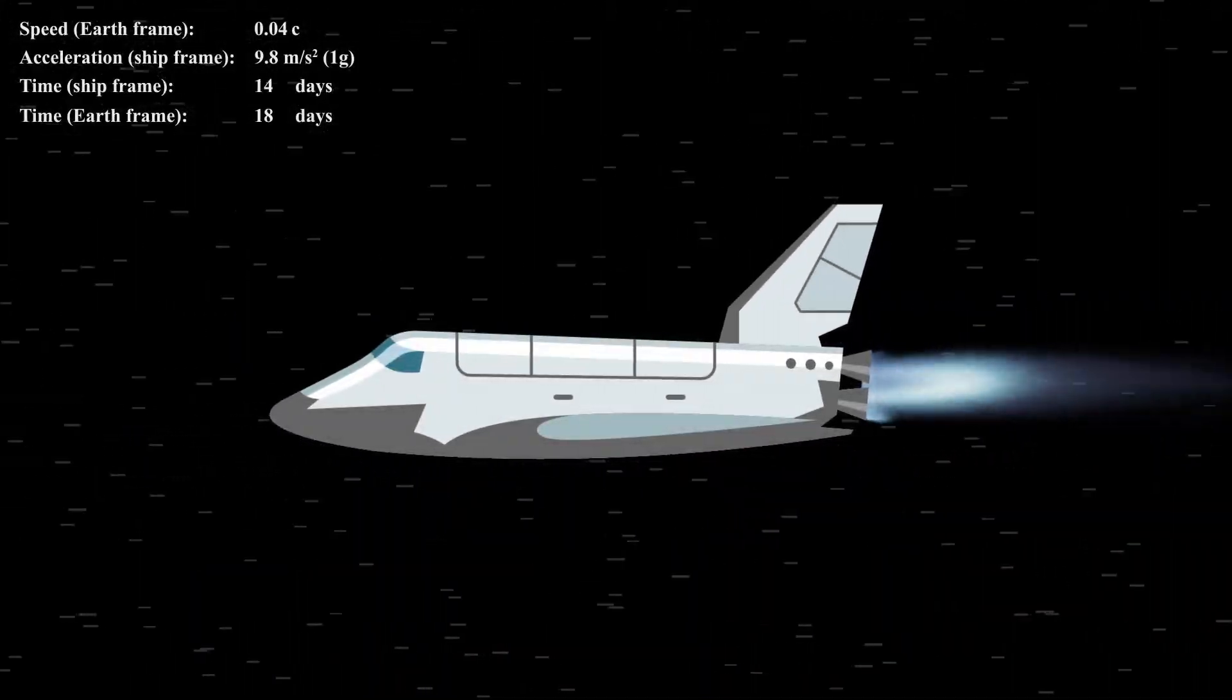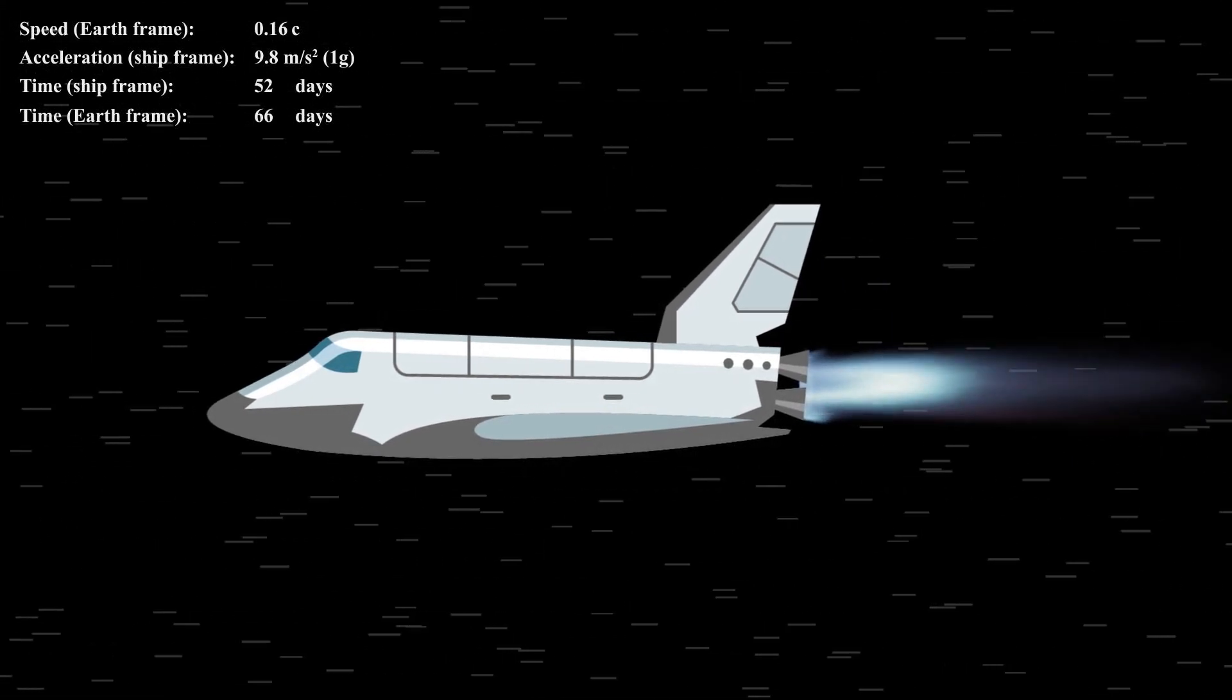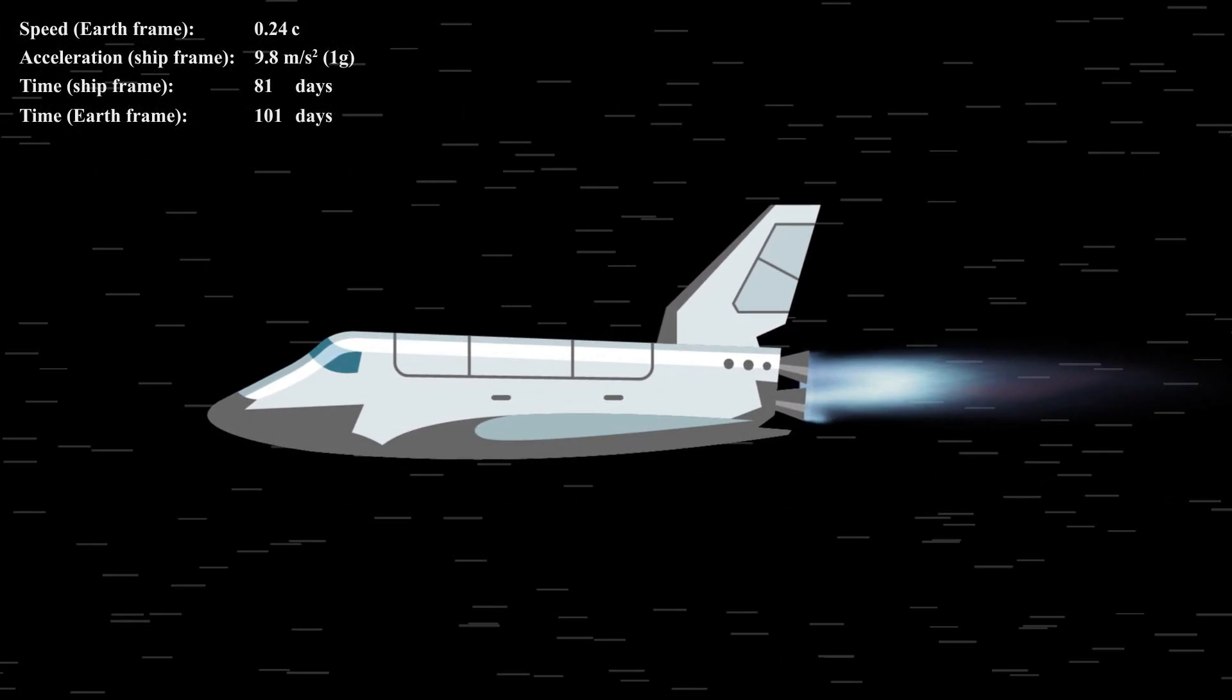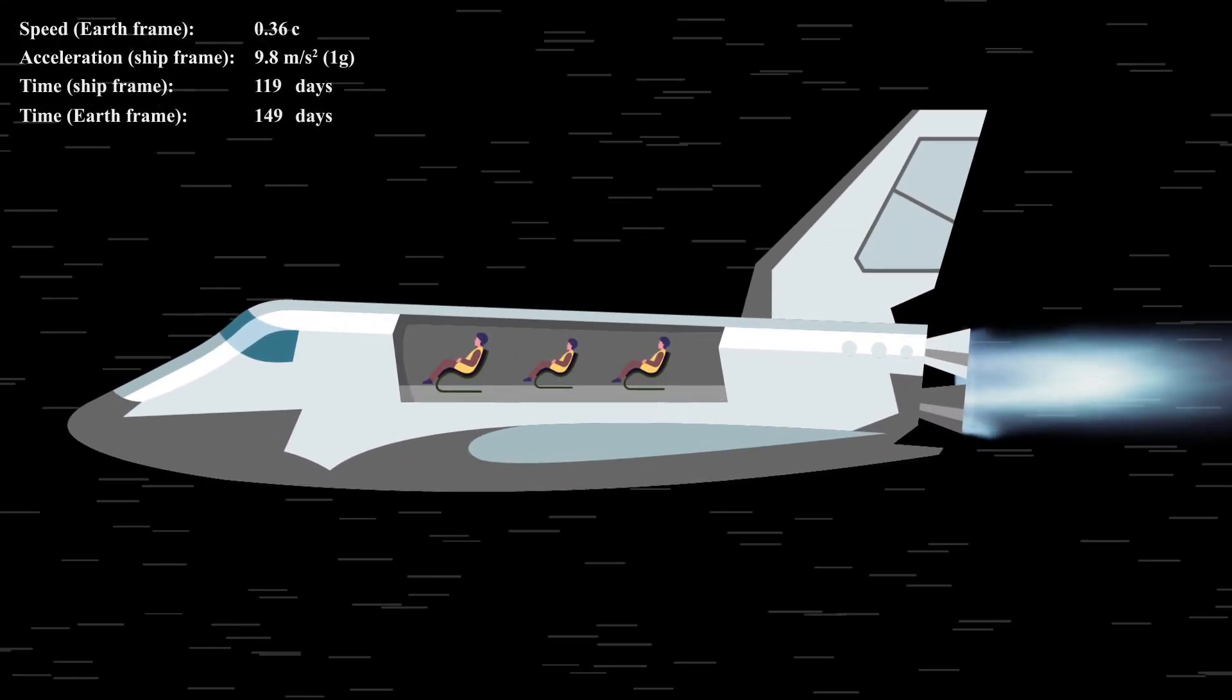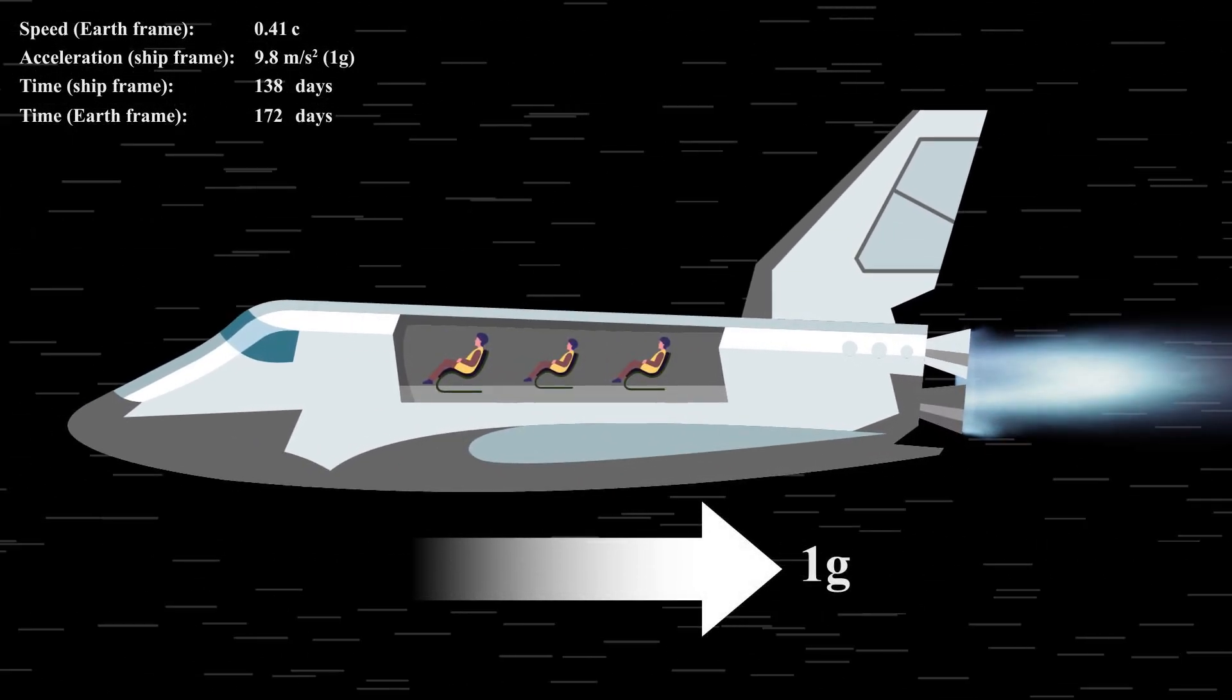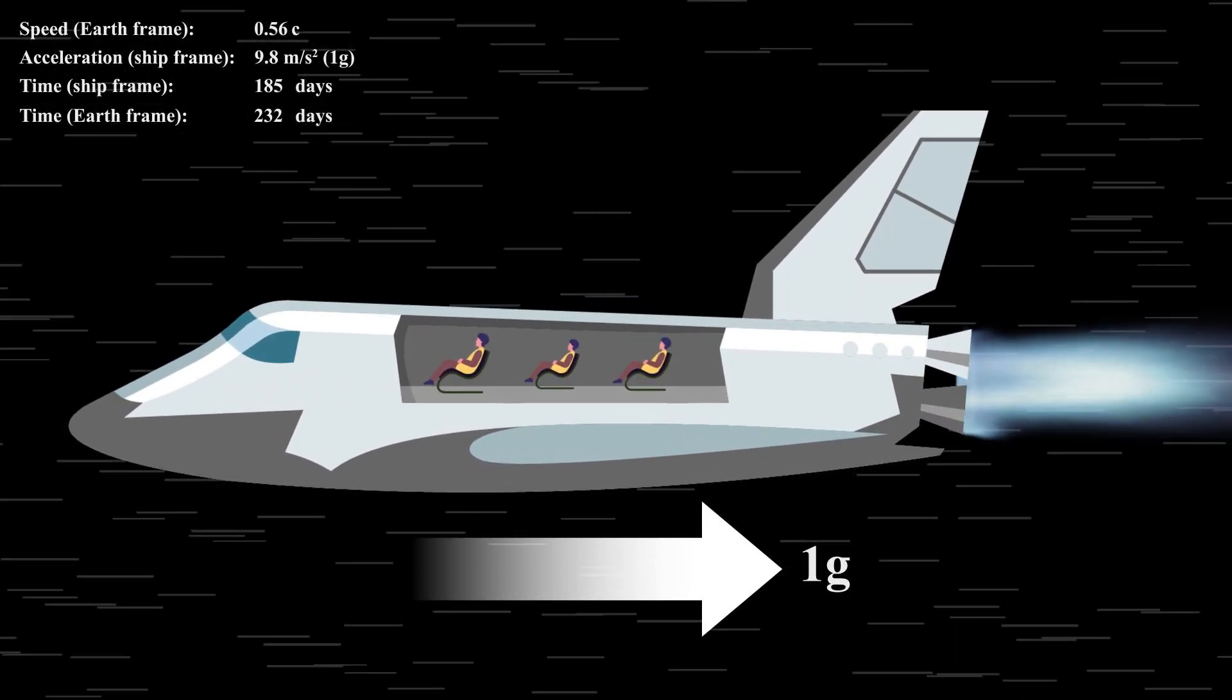Imagine we have an engine that can deliver a constant amount of thrust, which steadily accelerates the spacecraft and pushes it farther from Earth. To provide a comfortable interstellar travel, we cap our acceleration at 1g. This means that reaching 60% of the speed of light would take approximately 200 days.